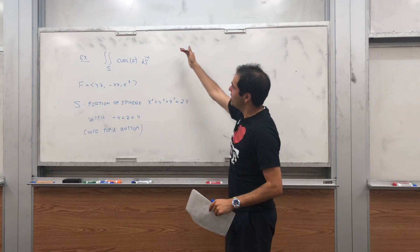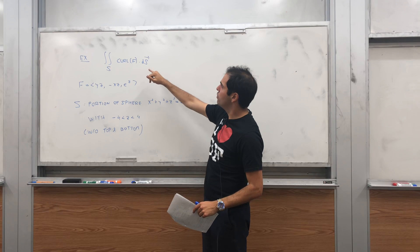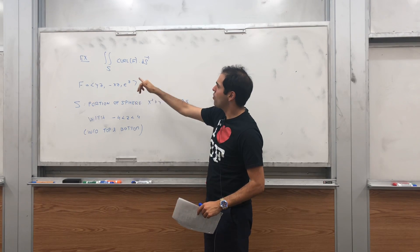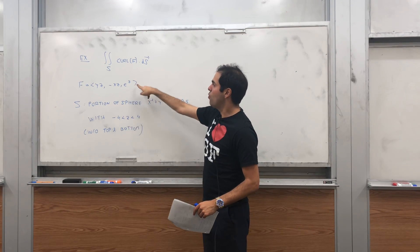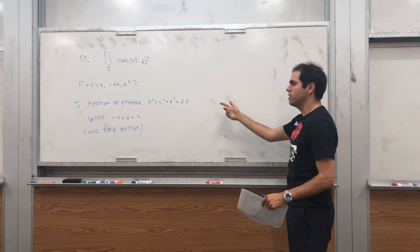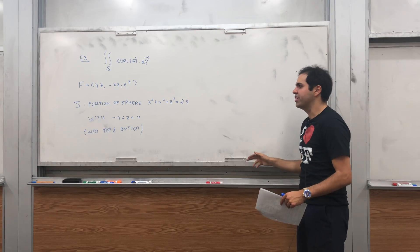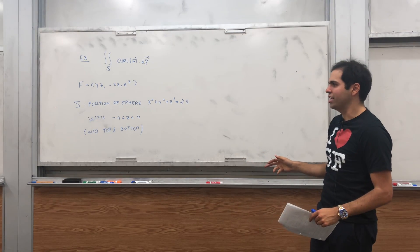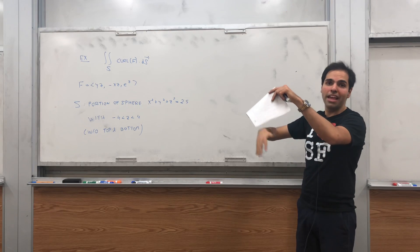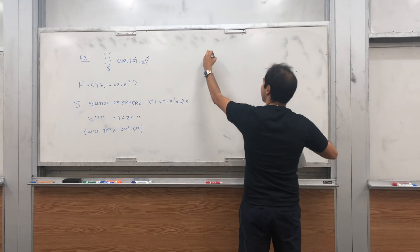So what's the question? Evaluate the double integral of the curl of f dotted with dS over S, where f is a given vector field and S is the portion of the sphere x² + y² + z² = 25 between the two planes z = -4 and z = 4.